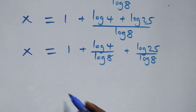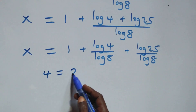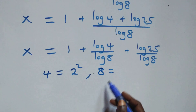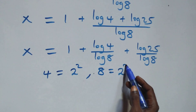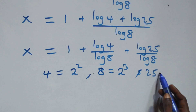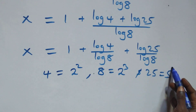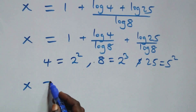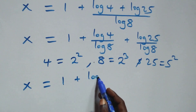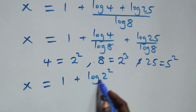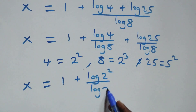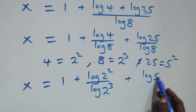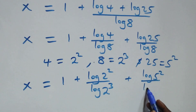Now, 4 is the same as 2 times 2, that's 2 squared. 8 is the same as 2 times 2 times 2, that's 2 cubed. And also 25 is the same as 5 times 5, that's 5 squared. So what we have becomes x equals to 1 plus log(2²) over log(2³) plus log(5²) over log(2³).